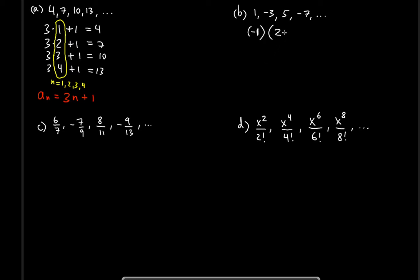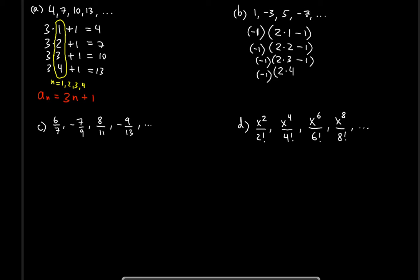Two times one is two, two times two is four, two times three is six, two times four is eight — and negative one is always there in parentheses. We get two but we need one, so we subtract one. We get four but we need three, so we subtract one. We get six but we need five, so we subtract one. We get eight but we need seven, so we subtract one.